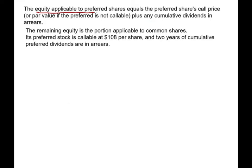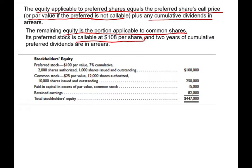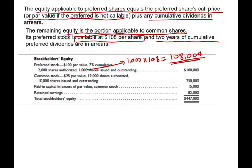Now let's assume we have a call price for the stock. The equity applicable to preferred shareholders equals the preferred shareholder call price, or par value if not callable, plus any cumulative dividends in arrear. Let's assume the callable price for the preferred is $108 — meaning to buy back those 1,000 shares and satisfy the preferred shareholders, we have to pay $108 per share. And let's assume we have two years of cumulative dividend in arrear.